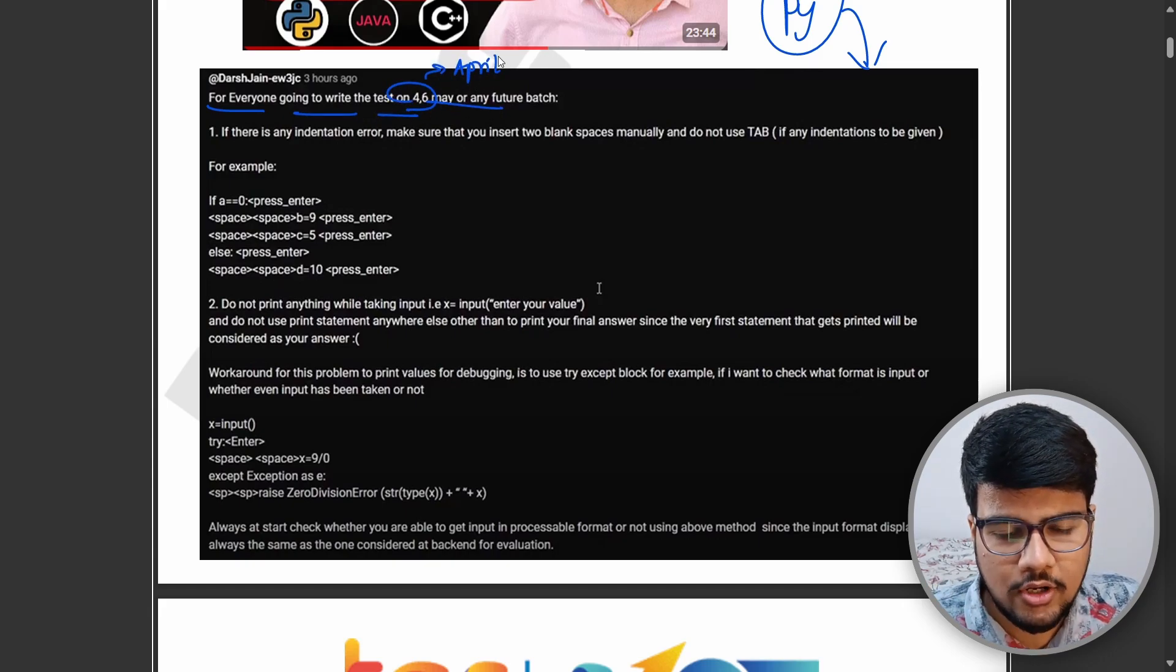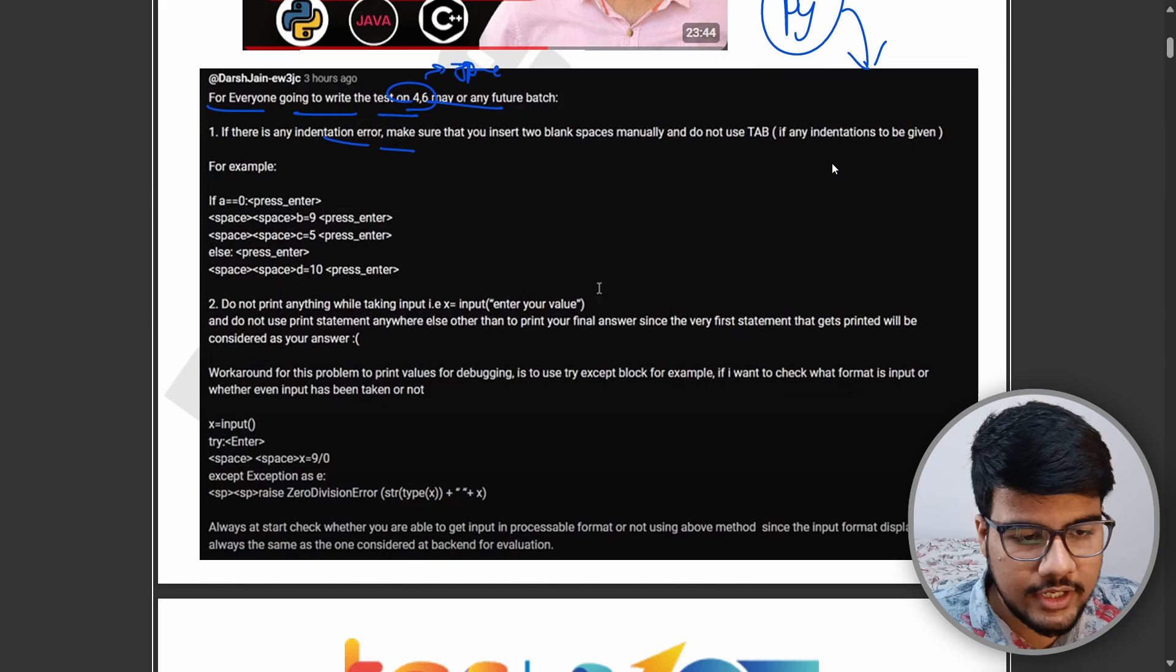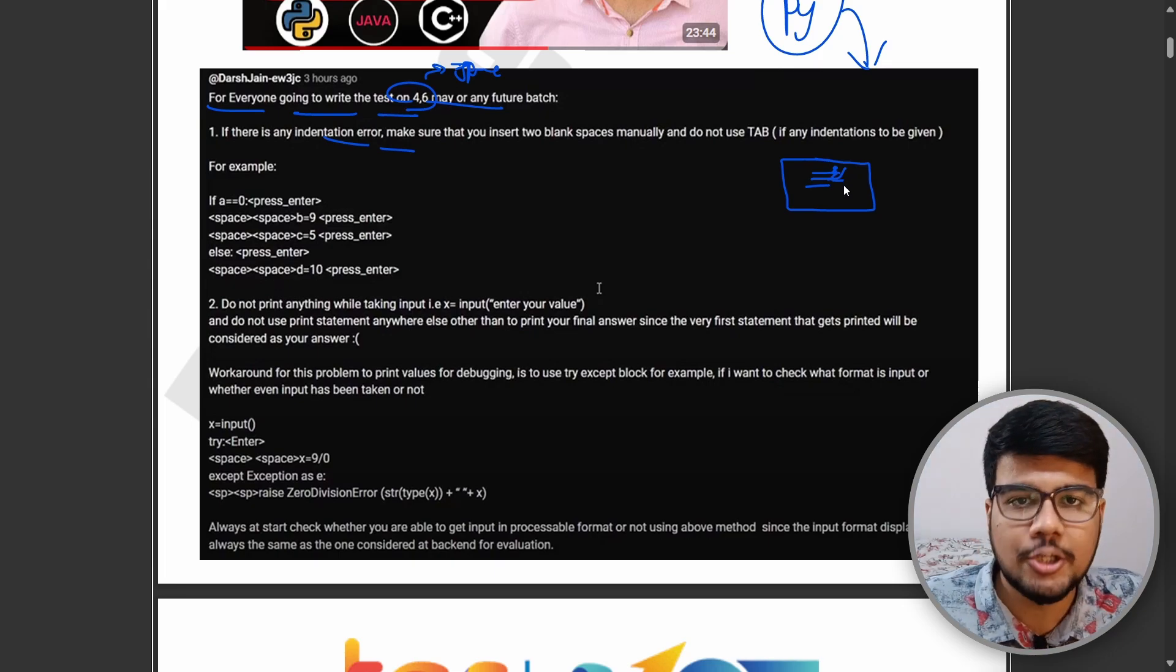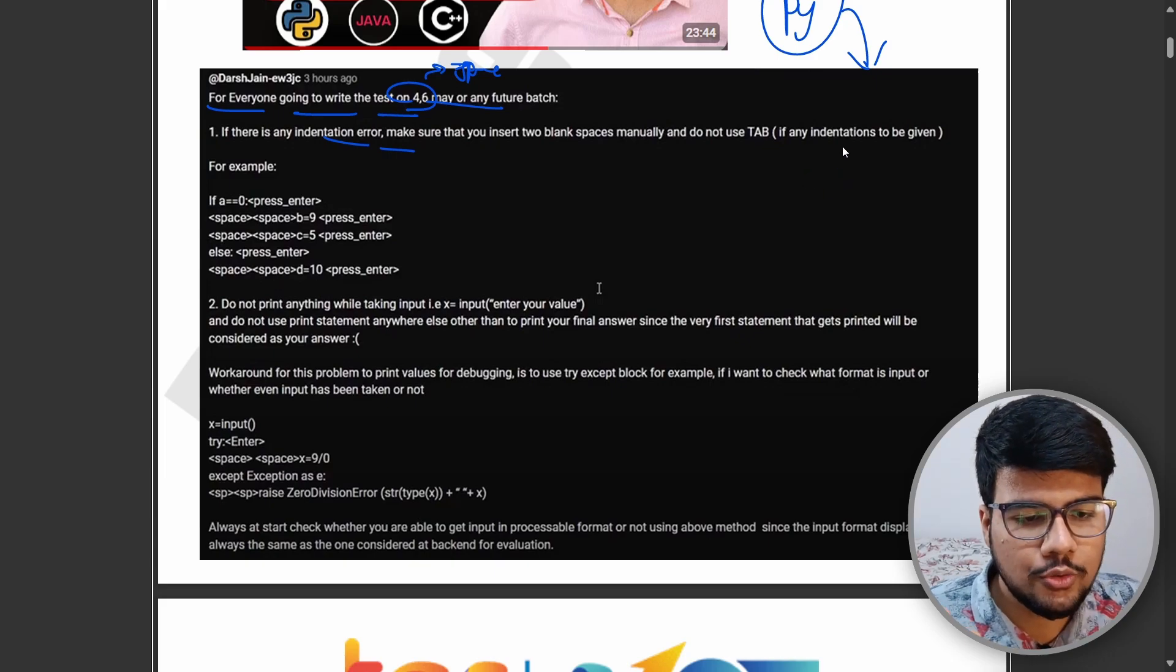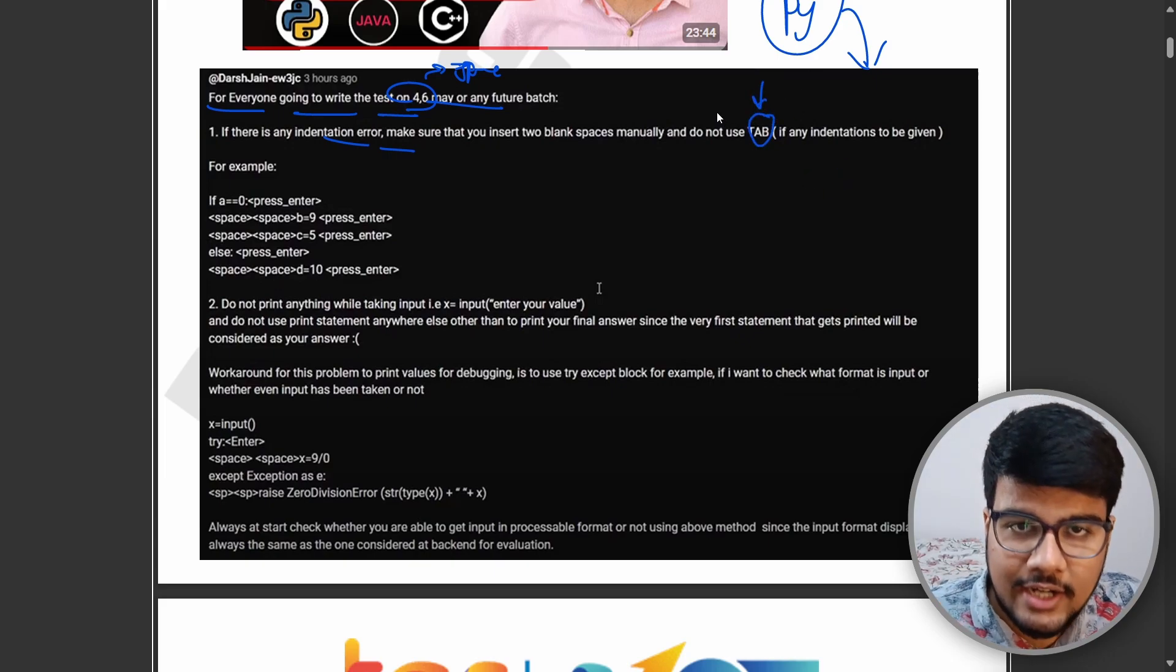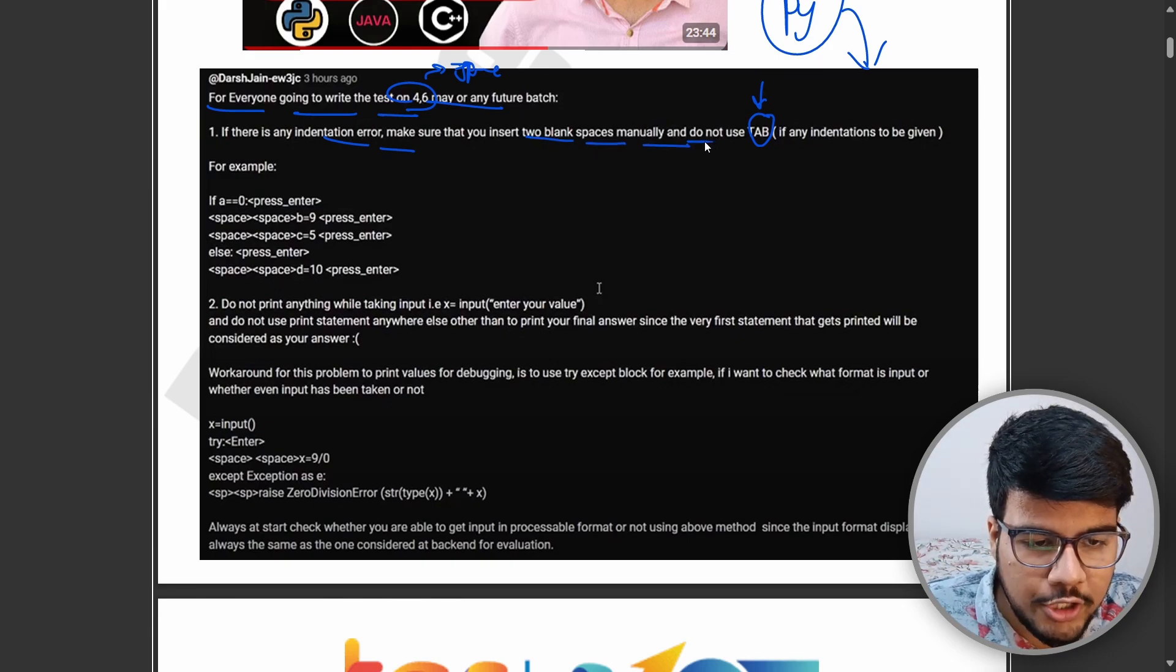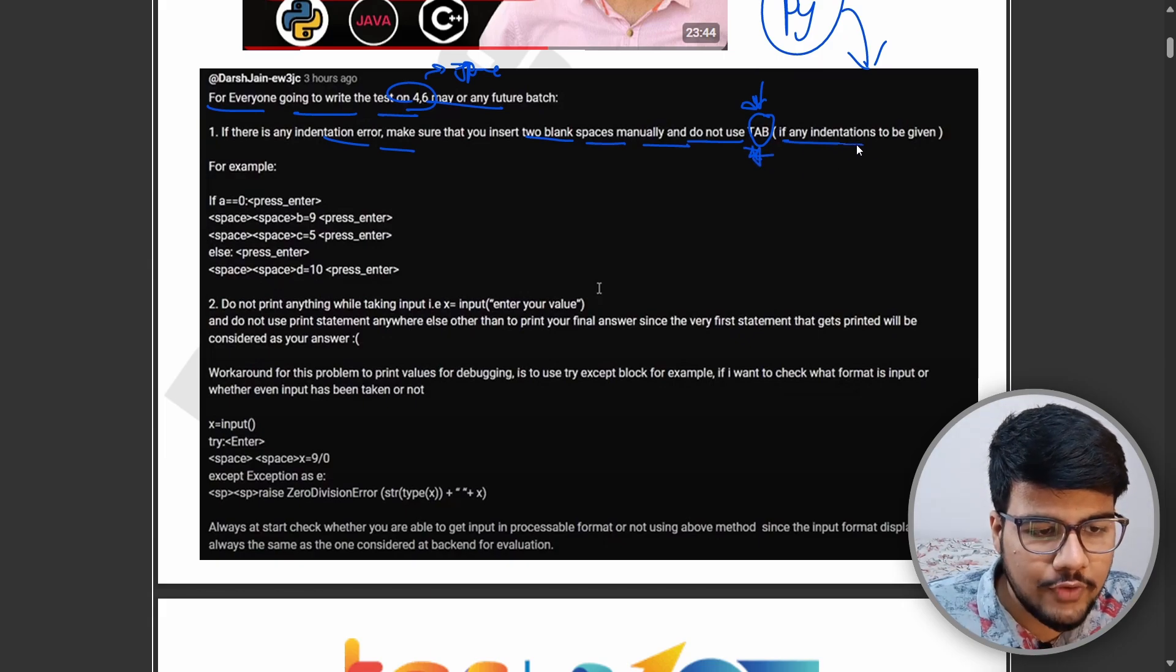For everyone going to write the test on fourth to sixth, if there is an indentation error—because their compiler is not produced or created in such a way that if you put Enter, you will end up having the indentation maintained—you need to maintain it by yourself. Most of the people use Tab, but this guy who experienced this and cracked it, that's why I'm re-discussing it. Two blank spaces manually, do not use Tab.